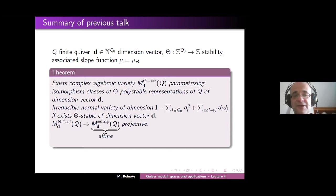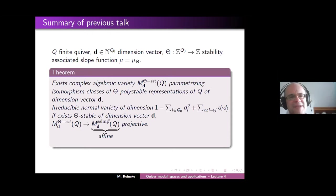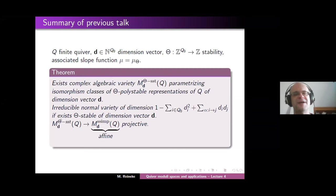As a corollary, think about the situation where Q is acyclic — where we don't have oriented cycles, so these moduli spaces of semi-simples reduce to a single point. Then you have a projective morphism to a single point, which means this thing itself is a projective variety. So if you have an acyclic quiver, this moduli space of semi-stables is always a projective variety, which is nice.